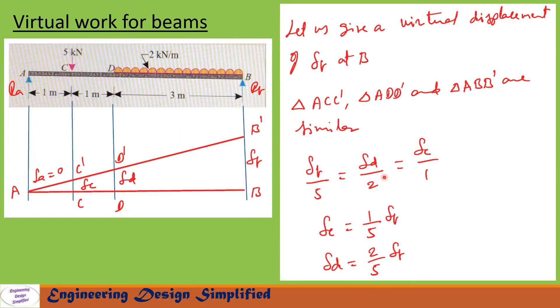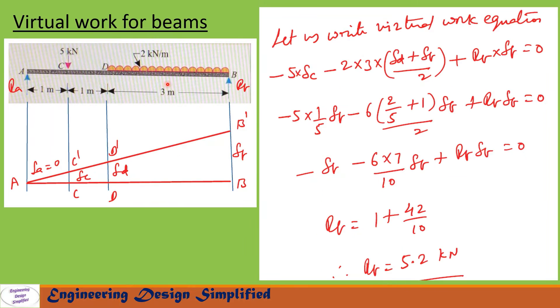From these three similar triangles we can write: delta B / 5 = delta D / 2 = delta C / 1. From this equation we can write: delta C = (1/5) × delta B, and delta D = (2/5) × delta B.